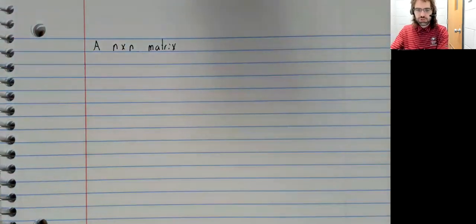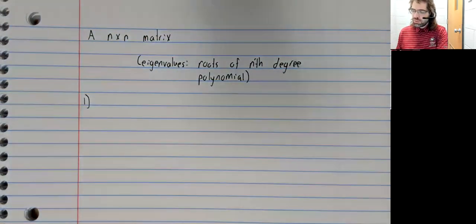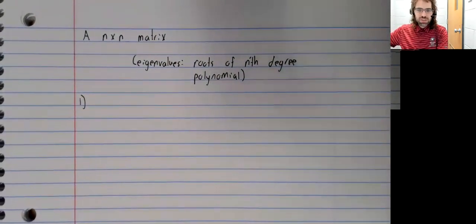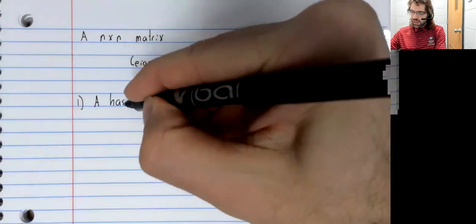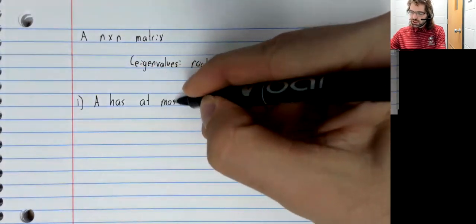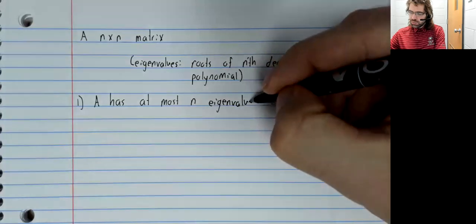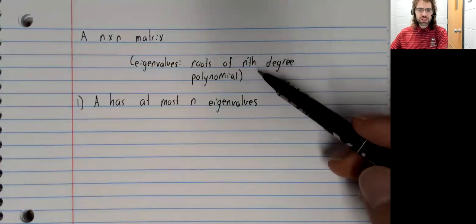Suppose that A is an n by n matrix. Then the eigenvalues are roots of nth degree polynomials, and reminding ourselves of what we know about polynomials, A has at most n eigenvalues. An nth degree polynomial cannot have more than n roots.